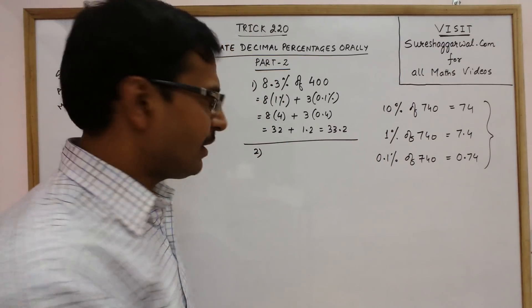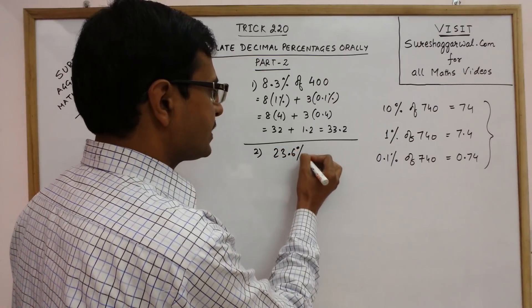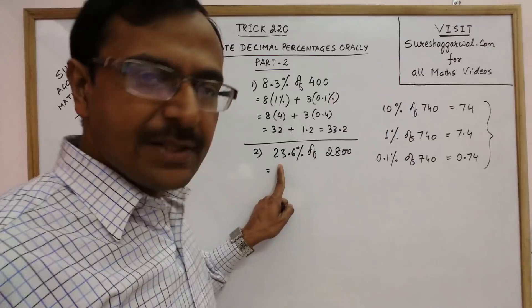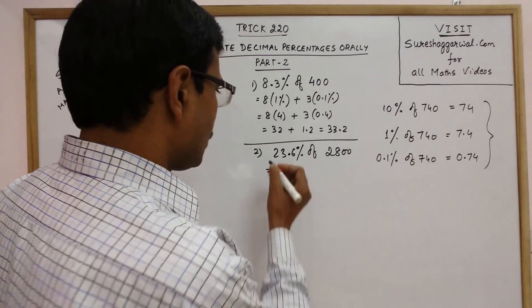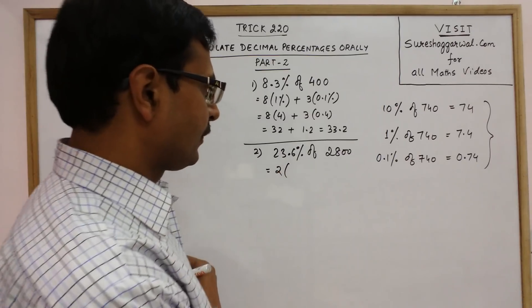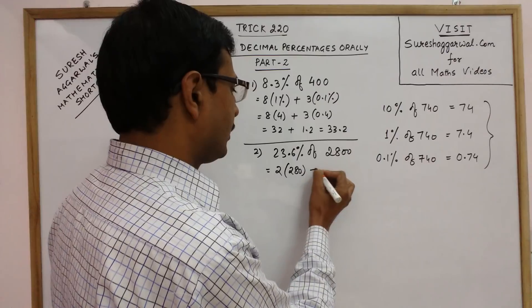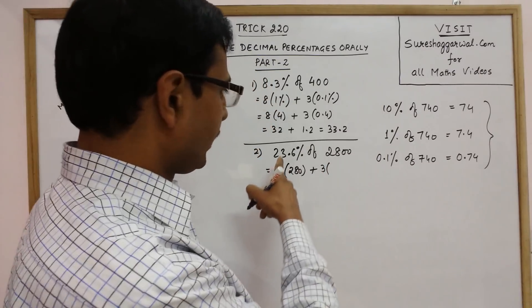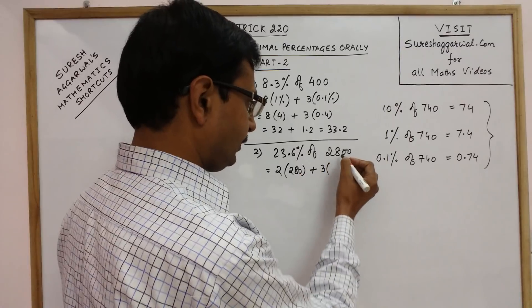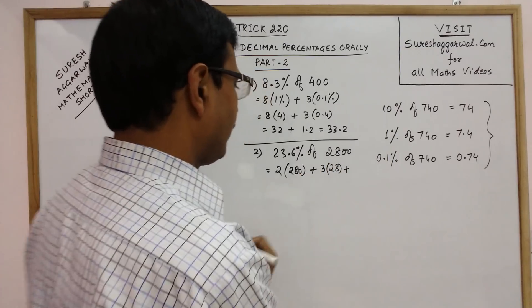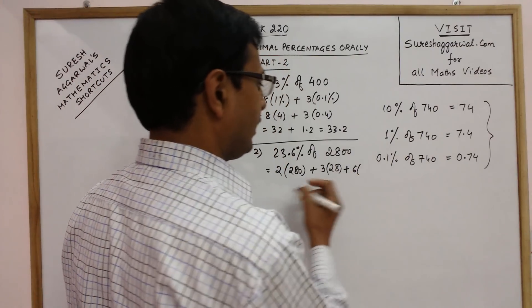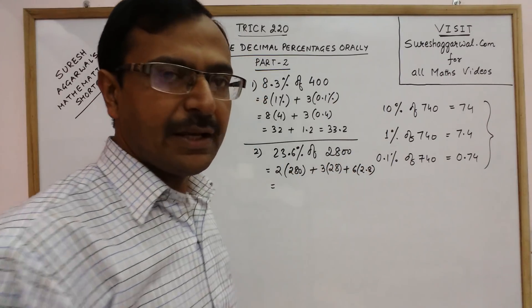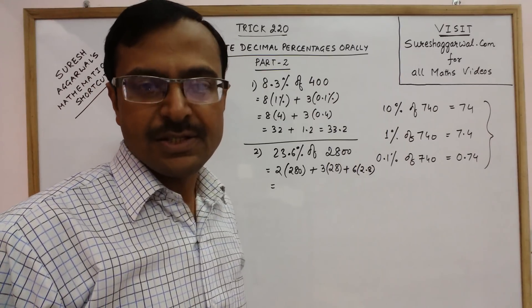Another example. Say this time we have 23.6% of the number which I am taking is 2800. Now see, this 23 is greater than 10% so we need 10% also now. So 2 into 10%, 10% of this is 280. Now this is 20%. Now further we have 3%. So 3% is 3 into 1%. So 1% of this is 28. And now we have 0.6%. So 6 into 0.1%. So 0.1%, 3 digits from the right 2.8. So once you get this step directly and have an understanding of this step further steps are very easy to calculate.